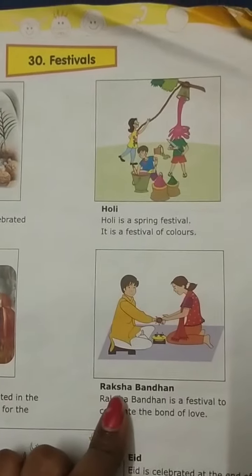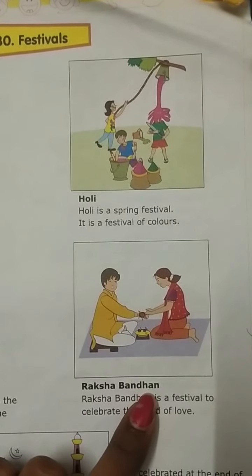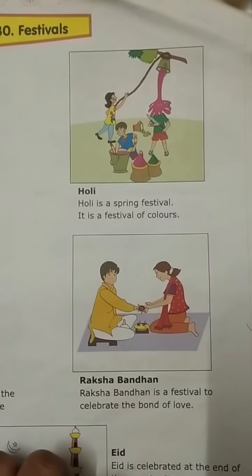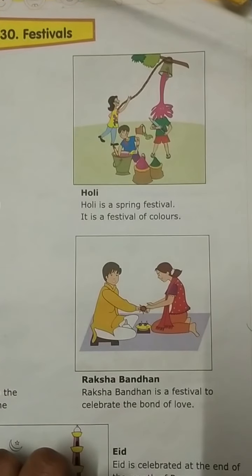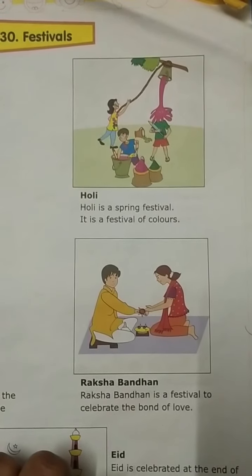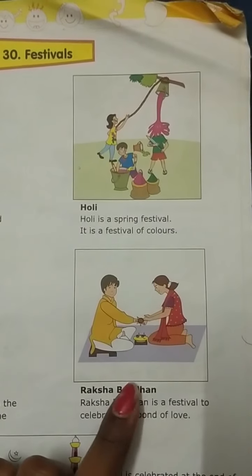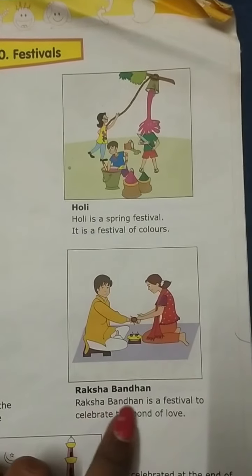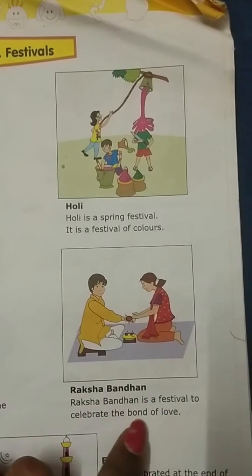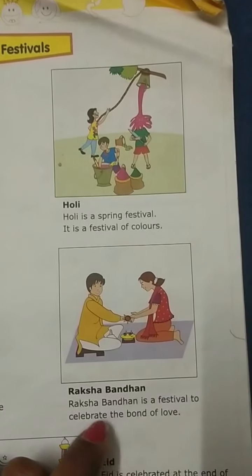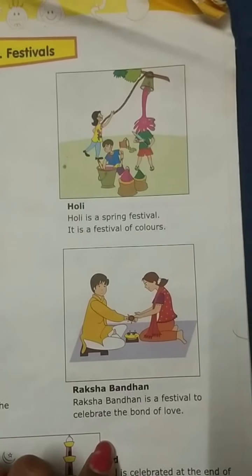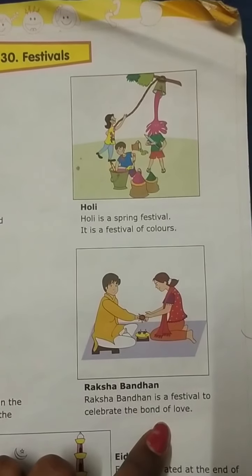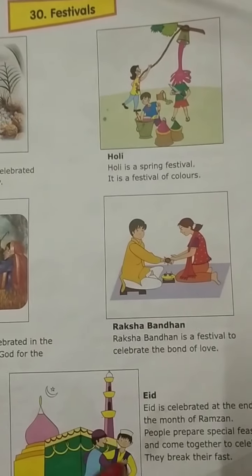Then we have Raksha Bandhan. You all know Raksha Bandhan. What do we do? We tie a Rakhi. For whom? A sister will tie a Rakhi for her elder brother. Raksha Bandhan is a festival to celebrate the bond of love. Many sisters will tie Rakhis for their brothers.